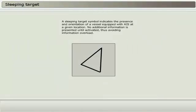A sleeping target symbol indicates the presence and orientation of a vessel equipped with AIS at a given location. No additional information is presented until activated, thus avoiding information overload.